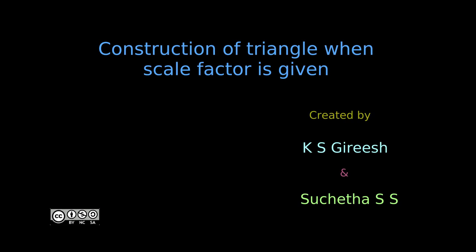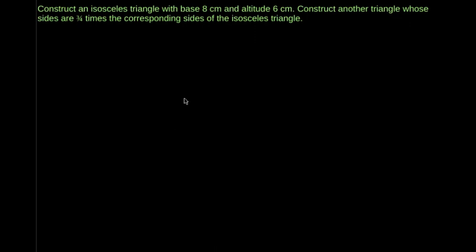Construct an isosceles triangle with base 8 cm and altitude 6 cm. Construct another triangle whose sides are 3/4 times the corresponding sides of the isosceles triangle.